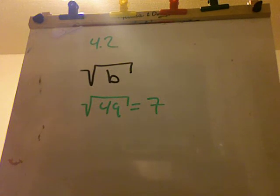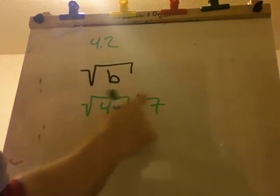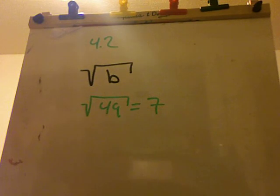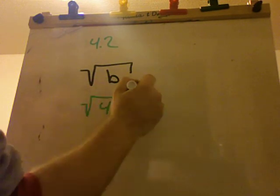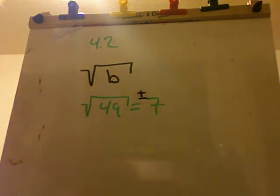All right, is there another number, though, to where you can also get 49? The answer is yes, a negative 7. So, you can end up with a negative 7. Negative 7 times negative 7 is 49. So, I put this plus or minus here, meaning that there's two possible answers. One answer is that we're looking for a positive 7. The other answer is we're looking for a negative 7.